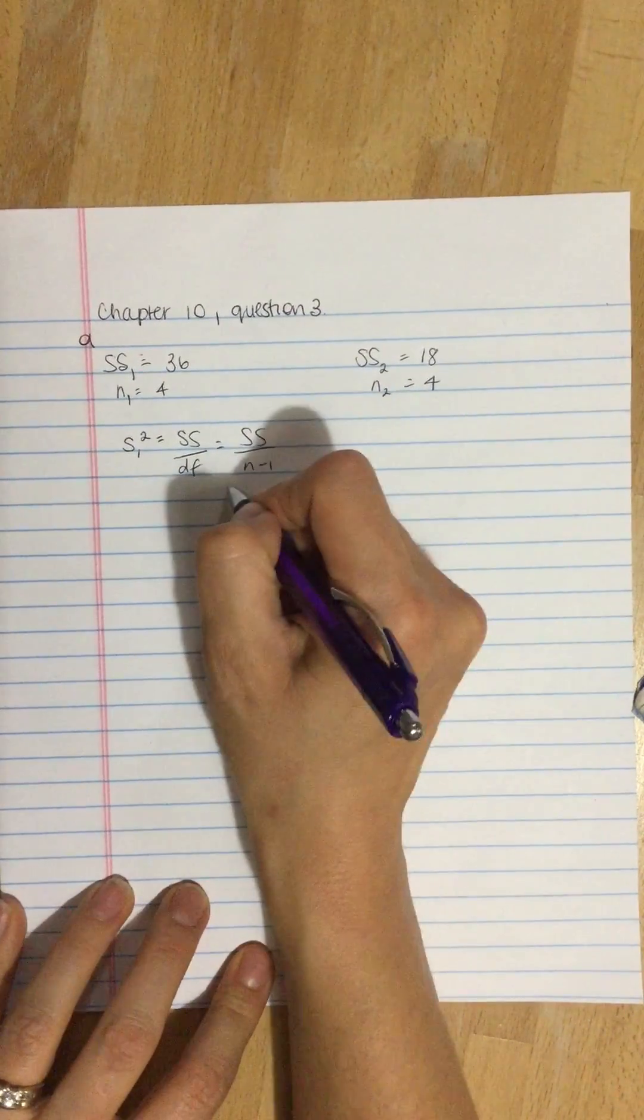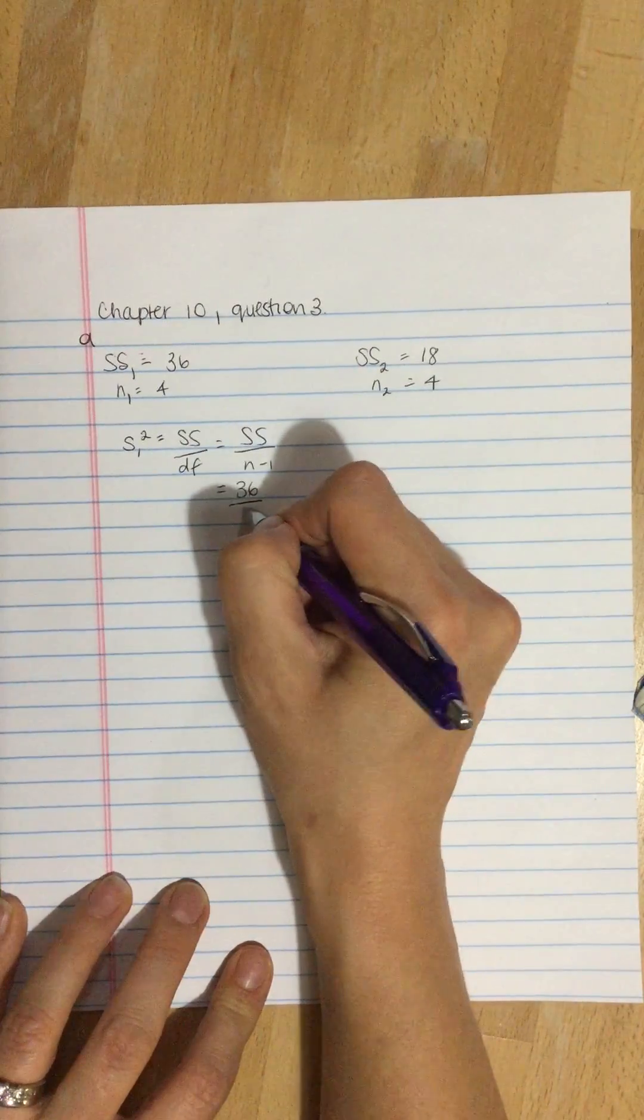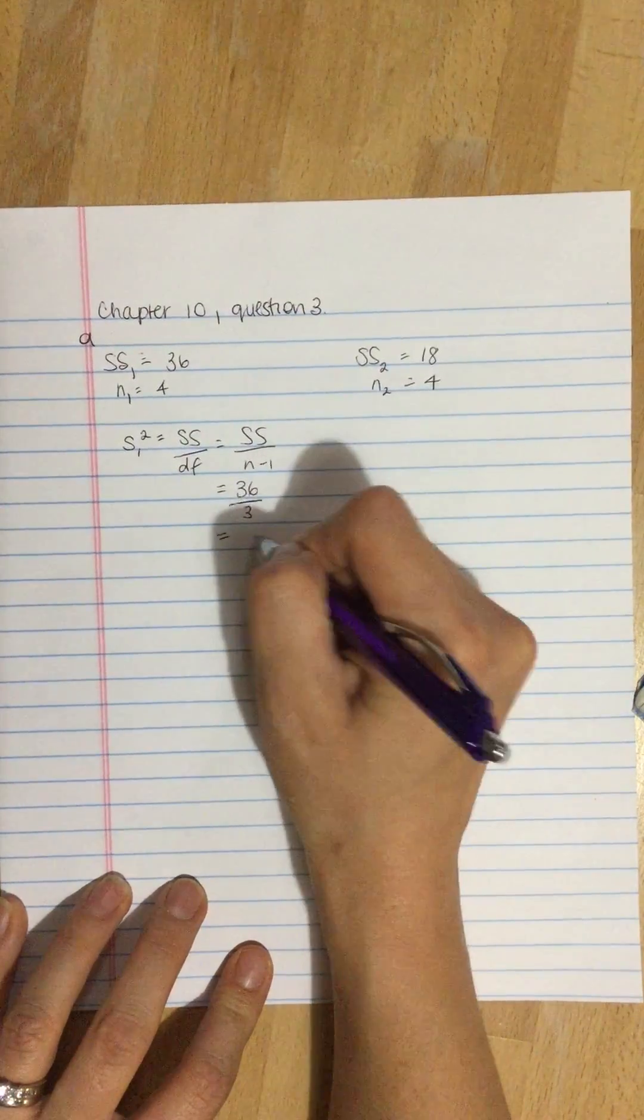We take 36 divided by 4 minus 1, divided by 3, and what we get is 12.